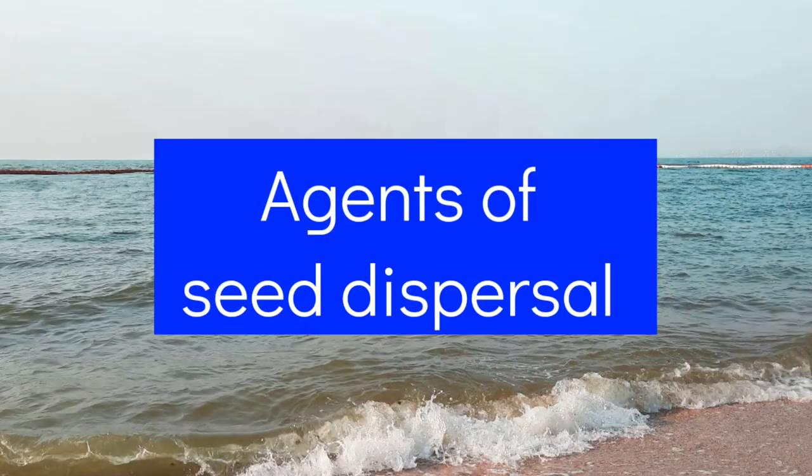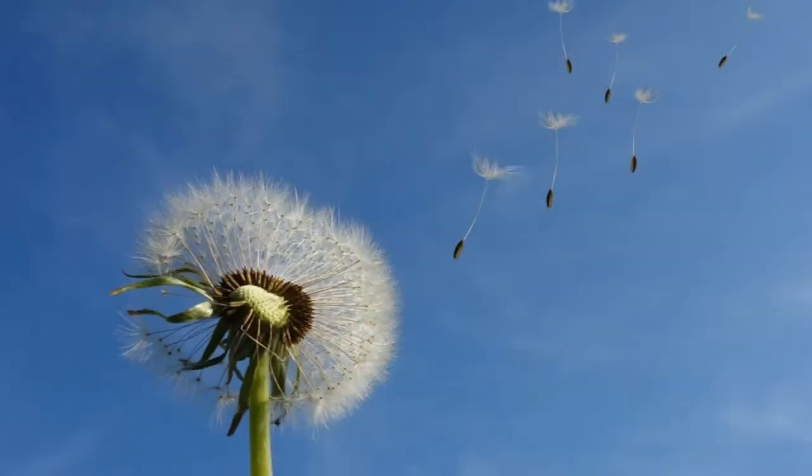Now let's discuss about the agents of seed dispersal. The agents mean the ways through which seeds can be dispersed — scattered away from the parent plant where they have enough space to breathe and grow.